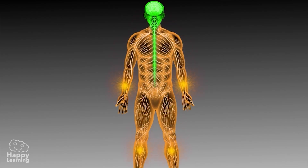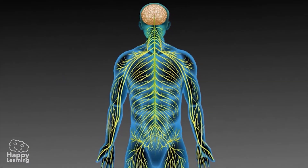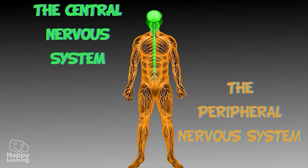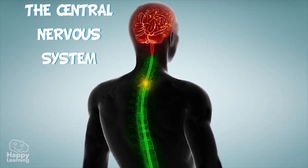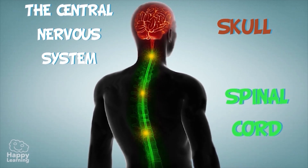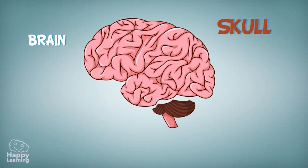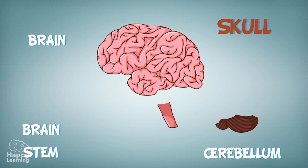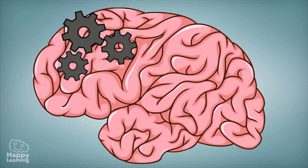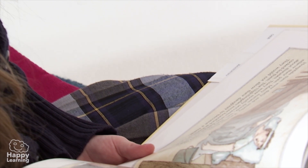The nervous system has special cells called neurons, and it is divided into two parts: the central nervous system and the peripheral nervous system. The central nervous system is made up of the skull and the spinal cord. The skull is where the brain is located, as well as the cerebellum and the brain stem. The brain occupies the largest part of the skull and is in charge of controlling our memory, emotions, and voluntary actions such as reading, writing, or jumping.